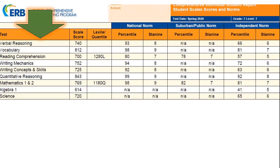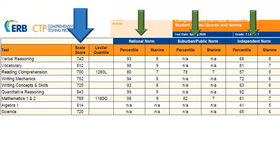Our sample student was tested on nine subtests listed here. Each subtest is given a scale score, and this scale score is then compared to three different norm groups.